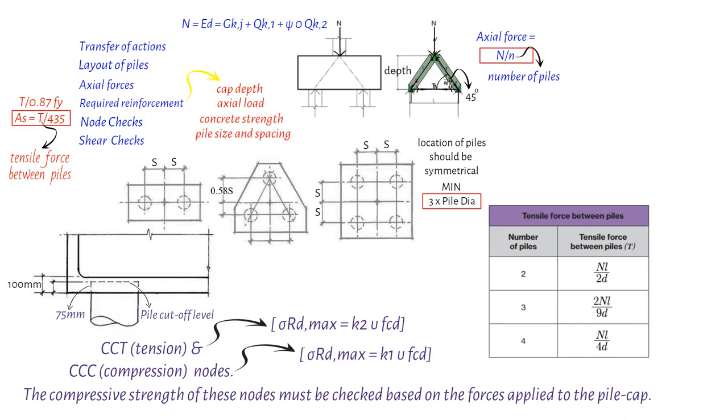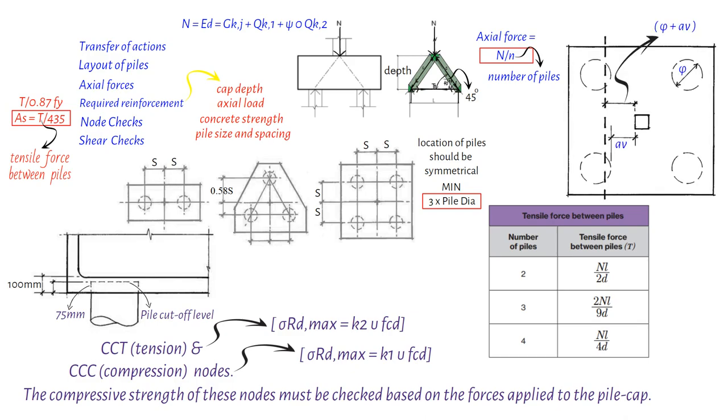Furthermore, it's imperative to check for shear failure in a critical shear plane near the vertical elements supported by the pile cap. The critical shear plane's location is determined by the distance between the face of the vertical element and the pile face. The shear resistance is calculated based on the enhanced shear capacity of the pile cap near the point of support, which is the pile head. The applied shear force can be reduced by the ratio of the pile cap depth to the critical shear plane distance.